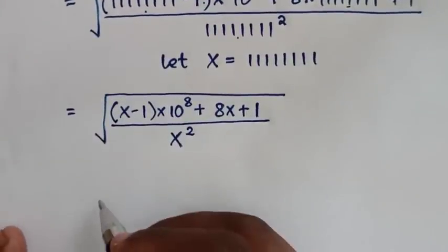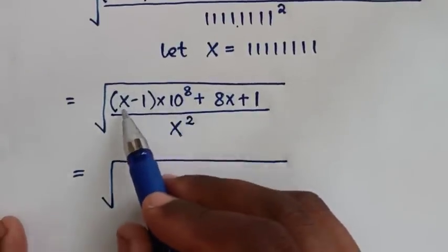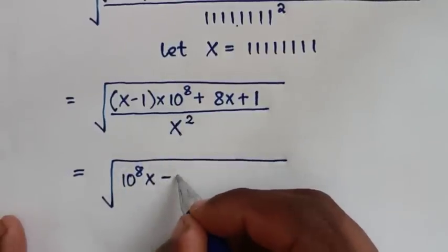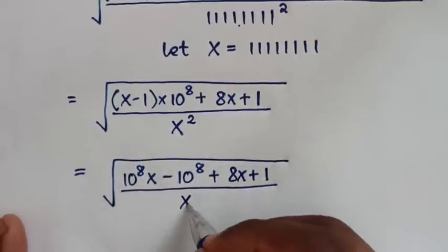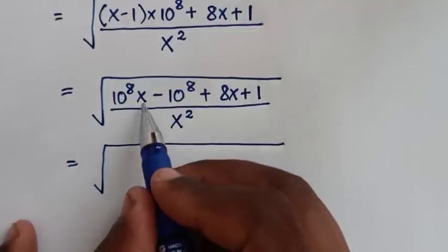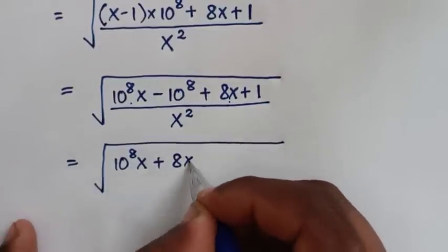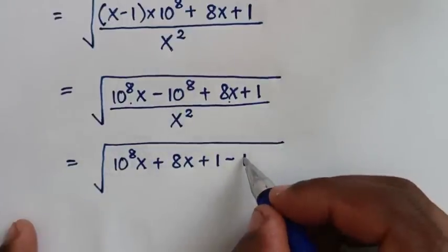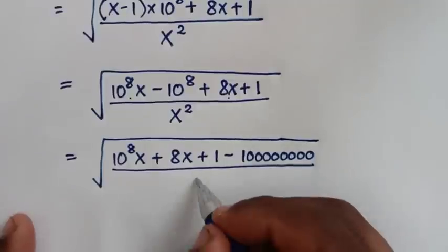In the next step it will be equal to the square root of: we take 10 to the power of 8 inside the bracket, so x times 10 to the power of 8 gives us 10⁸x, then minus 1 times 10 to the power of 8 gives us minus 10⁸, then plus 8x plus 1, over x squared. Collecting like terms: 10⁸x plus 8x, then plus 1 minus 10 to the power of 8 — which is 1 with 8 zeros: 100000000 — over x squared.